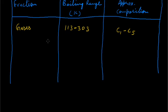The first fraction is gases. Their boiling range is 113 to 303 Kelvin and the number of carbon atoms present in them are 1 to 5.